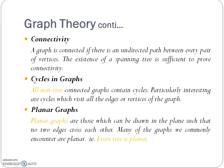Next is connectivity. Connectivity is nothing but the number of edges representing or going from the vertices. It mainly consists of a spanning tree as a substitute for connectivity. All spanning trees represent the connected cycles in the graph, and all non-tree connected graphs contain a cycle.